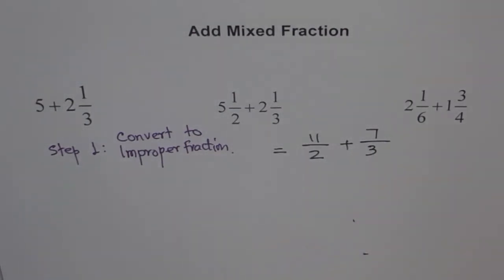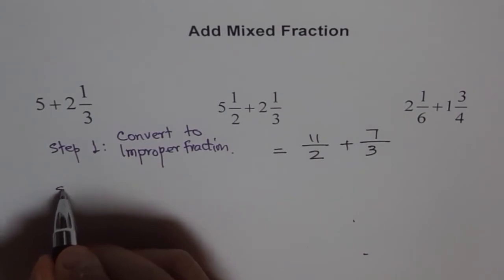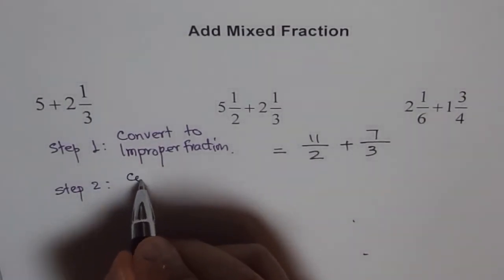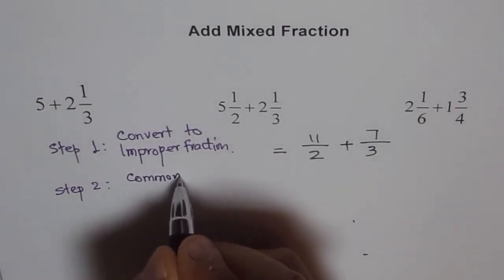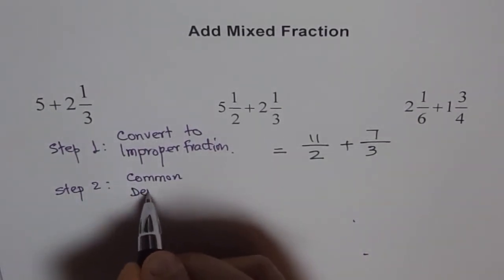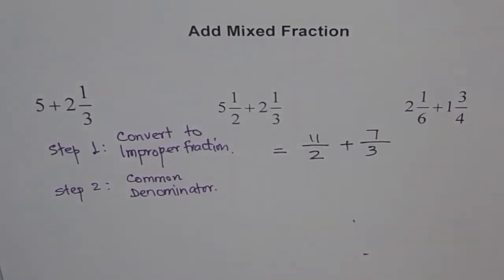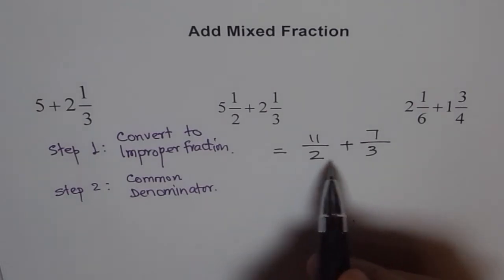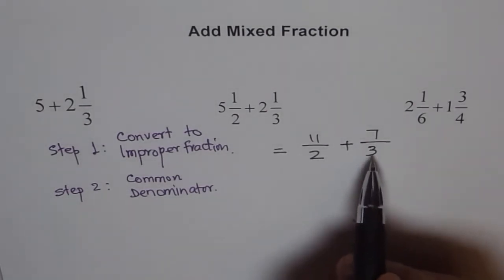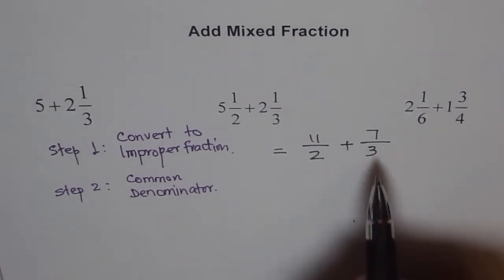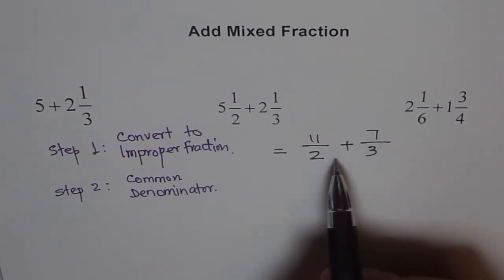Now, step number 2. Step number 2 here is, find common denominator. Now, here, what is the common denominator? This is over 2, this is over 3. So, the next common multiple is, we can find multiples of 2 are 2, 4, 6, 8 and multiples of 3 are 3, 6, 9. 6 is common.